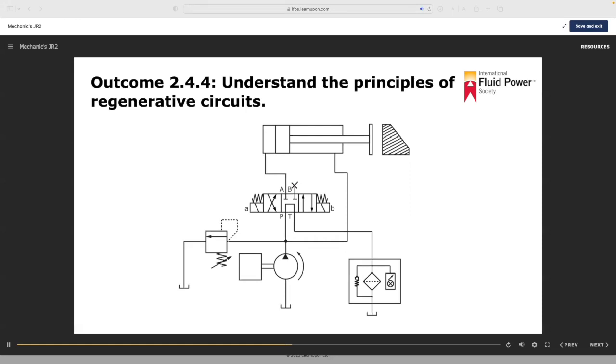The force caused by the pressure on the annulus area—the area around the rod—acts against some of the force on the piston. Only the pressure acting on the area of the rod is effective in producing force. This makes calculating the characteristics of a regenerative circuit quite easy. It is as though the flow and pressure were acting only on the rod of the cylinder.